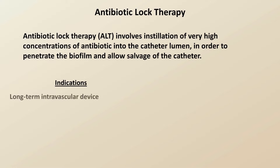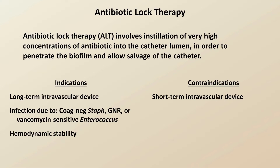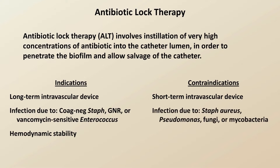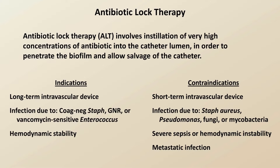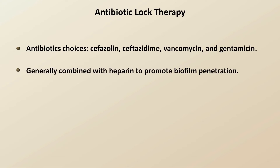Indications for antibiotic lock therapy include the presence of a long-term intravascular device, infection due to either coagulase-negative staph, a non-pseudomonal gram-negative rod, or vancomycin-sensitive enterococcus, and hemodynamic stability. Contraindications are a short-term intravascular device such as a routine triple-lumen central line — which should just be removed — infection due to Staph aureus, Pseudomonas, fungi, or mycobacteria, severe sepsis and/or hemodynamic instability, metastatic infection such as endocarditis or a distant abscess, or an extraluminal catheter infection such as a pericatheter abscess. Antibiotic choices include cefazolin, ceftazidime, vancomycin, and gentamicin. Once chosen, the antibiotic is generally combined with heparin as this is believed to promote biofilm penetration.